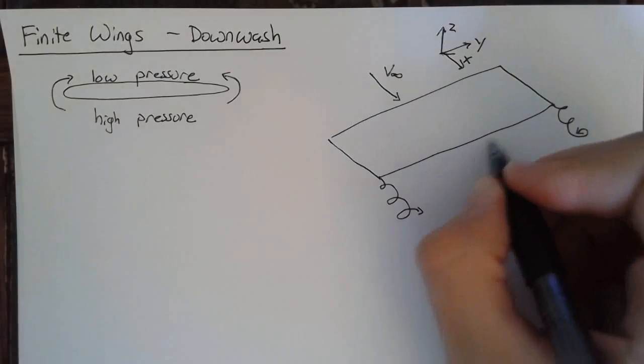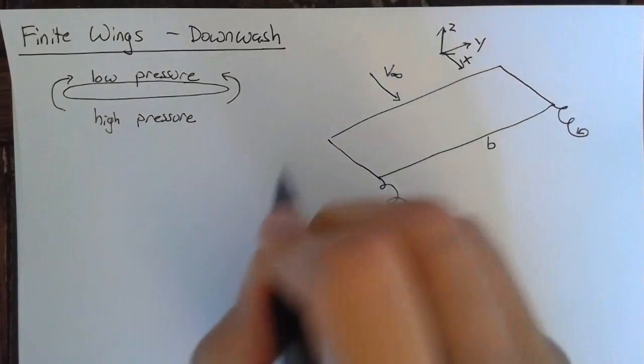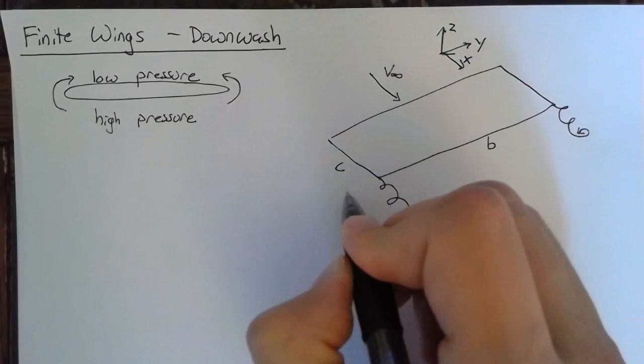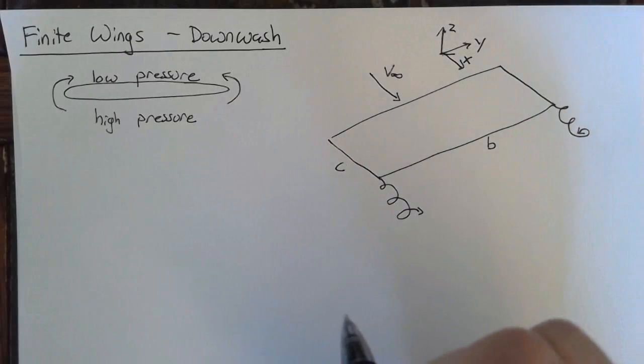Alright, so let's define this a little more thoroughly. So the length of this rectangular wing is going to be b, and that's our span. And then the distance, the chordwise distance is c as before.